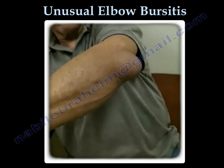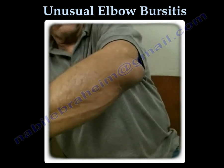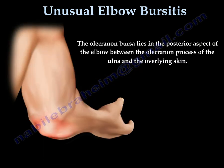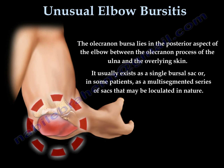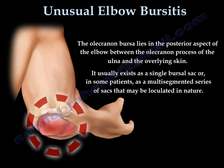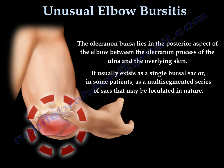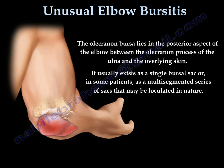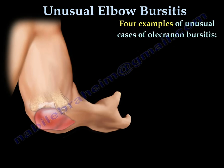This video covers unusual elbow bursitis. Olecranon bursitis lies in the posterior aspect of the elbow, between the olecranon and the overlying skin. Usually it is a single bursal sac; rarely it is multi-segmented or loculated in nature. These are four examples of unusual cases of olecranon bursitis that could be important.